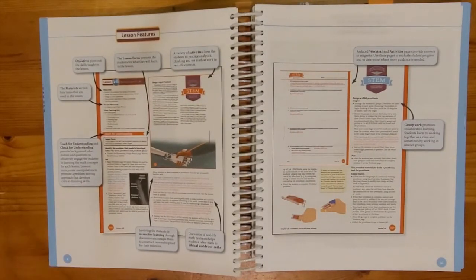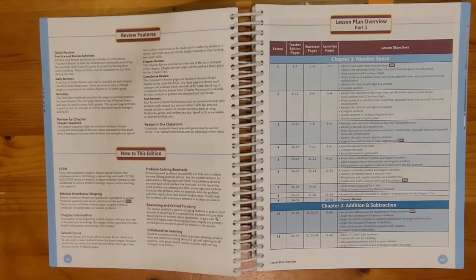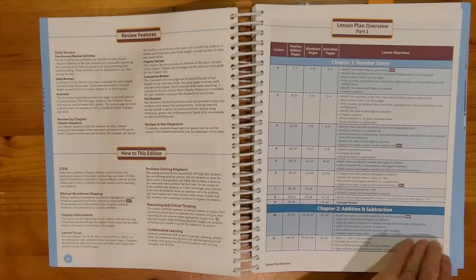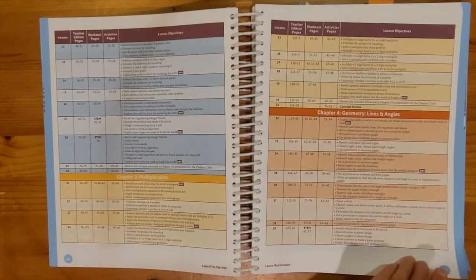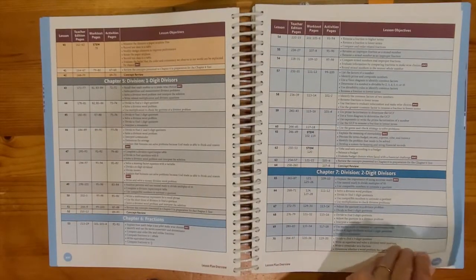These pages show us the lesson features so it gives us an idea of how every lesson is laid out in this book. This page gives us information on reviewing in this book and what is new to this edition. And then we begin the lesson plan overviews. Each chapter has a section in the lesson plan overview.